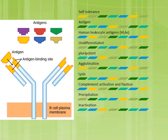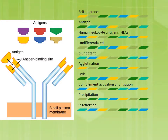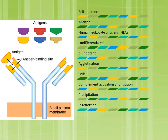Precipitation is the formation of large insoluble antigen-antibody complexes during the antibody-binding process. Inactivation is the process of binding an antibody to an antigen to cover the antigen's active site and make the antigen harmless without destroying it, also called neutralization.